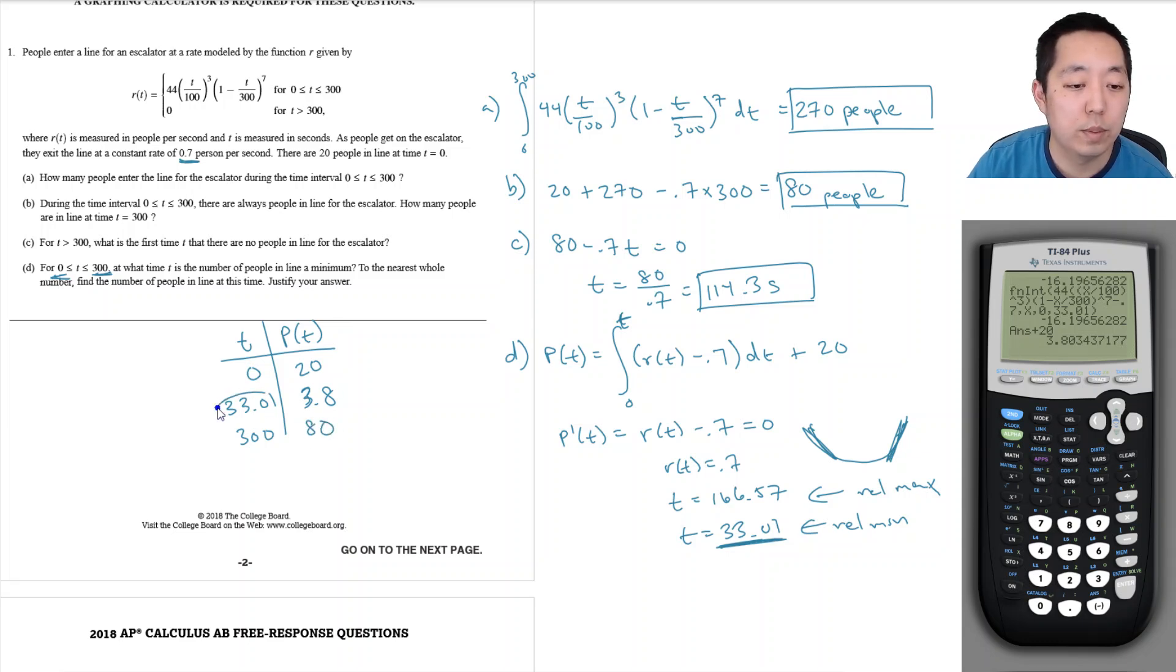This is the minimum. At what time t is the minimum number of people? t is minimum at 33.01 and the number of people was 4 people.